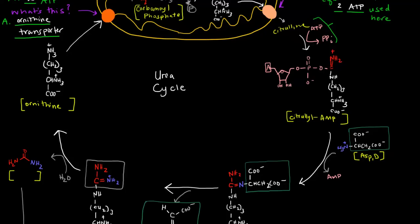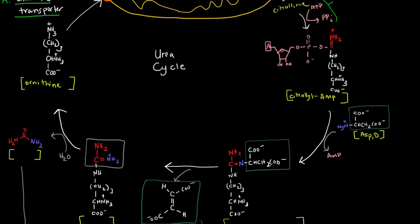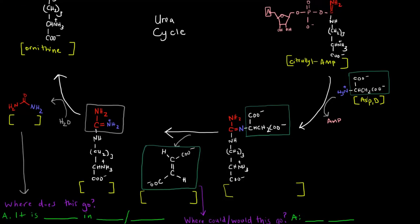Once this aspartate comes in to incorporate itself into the citrulline-AMP, the AMP actually hops off. And what we get is this aspartate attaches right here at that carbon. And then we get this molecule here. This molecule is now called arginosuccinate.